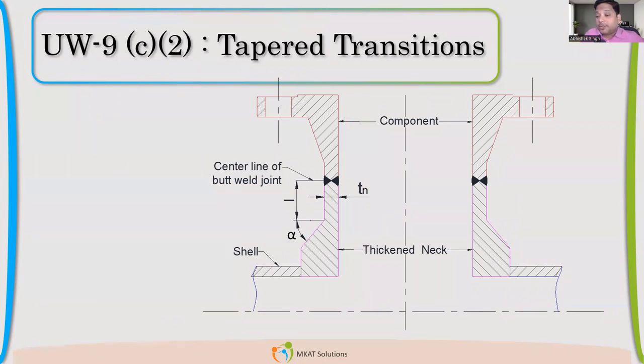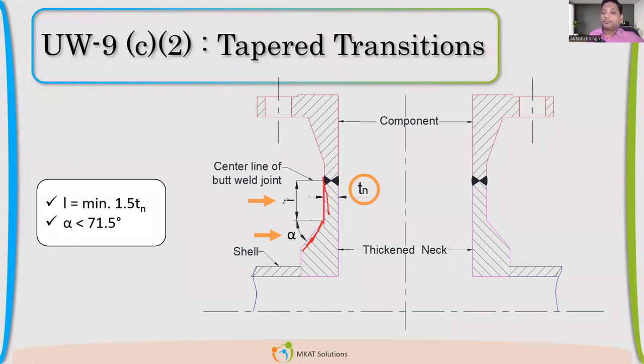Related to taper transition, one more requirement where the nozzle is coming. When the nozzle neck and we have integral reinforcement, this is the integrally reinforced nozzle. If this is the nozzle configuration, then I should have L, that length from where your reinforcement angle will start. This length, I should have at least 1.5 times of TN. TN is the neck thickness.